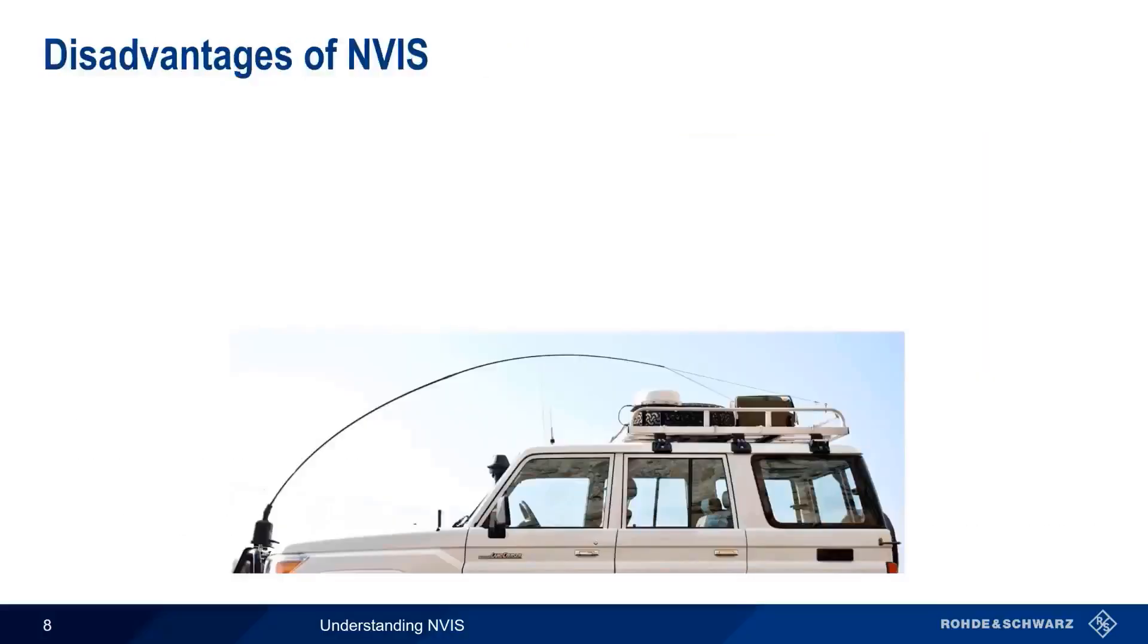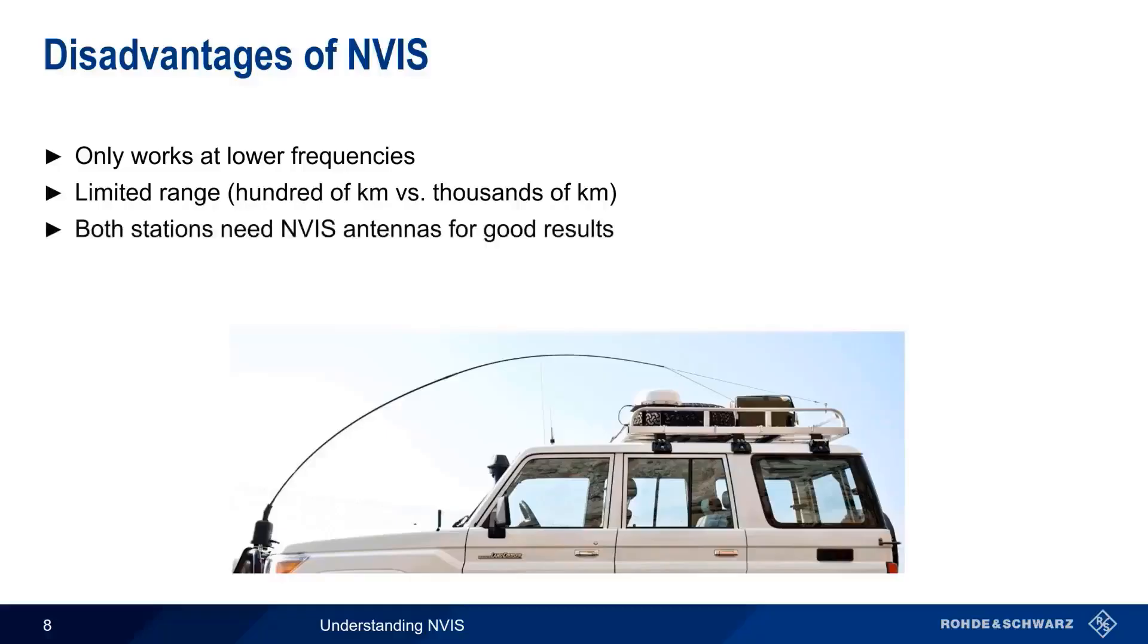There are, however, some disadvantages when using NVIS. One of the most important of these is that NVIS only works at lower frequencies. We'll discuss this in more detail shortly. The nature of NVIS antenna patterns and propagation also means that NVIS has a limited range, typically only hundreds of kilometers, compared to the thousands of kilometers that can be achieved using traditional low-incidence skywave communication. Furthermore, optimum results require the use of NVIS antennas on both the transmit and receive stations, although this requirement is somewhat looser for receive-only antennas. An additional potential disadvantage of using NVIS is the fact that both atmospheric and man-made noise tend to be higher at the lower frequencies that are used in NVIS communications.